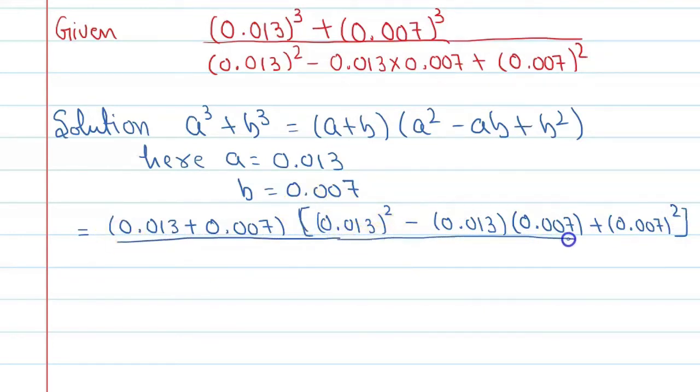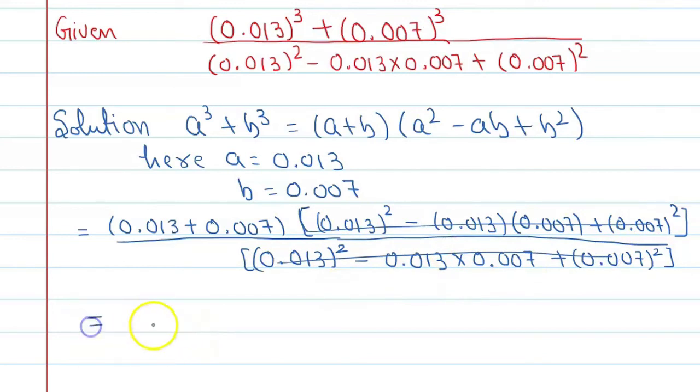In the denominator, we put the value as it is: 0.013 raised to power 2 minus 0.013 into 0.007 plus 0.007 raised to power 2 in a square bracket. The terms from numerator and denominator are the same, so this and this will get cancelled and here we will get 0.013 plus 0.007.